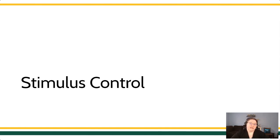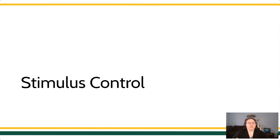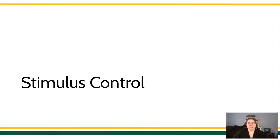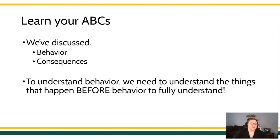All right, everybody. Welcome back. It's Veronica Howard. So this whole time we've been talking about behavior and we've been talking about the consequences of behavior, but we've left out something really important when you're trying to evaluate what's happening with a person's responses. We've kind of left out the context where that behavior occurs. We need to know about where behavior occurs and that our client is emitting behavior in a particular context. Let's go back to basics and talk about our ABCs.